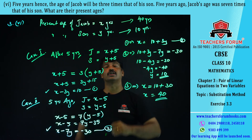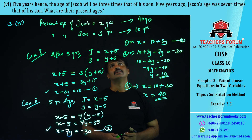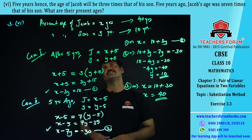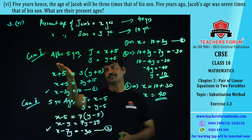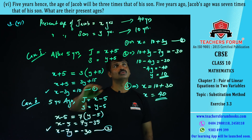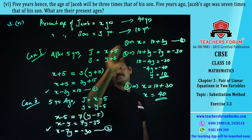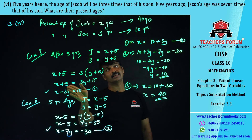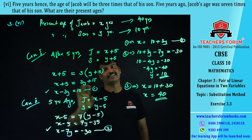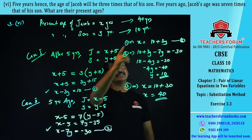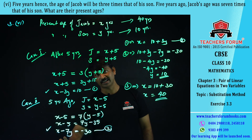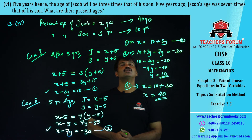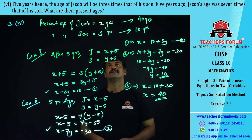Present age of Jacob is 40 years and his son is 10 years. Let us verify: equation one check — x − 3y = 40 − 30 = 10. Correct. Equation two check: x − 7y = 40 − 70 = −30. Correct. So the present age of Jacob is 40 years and his son is 10 years.